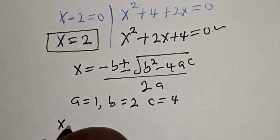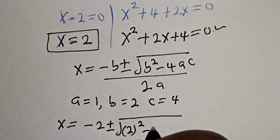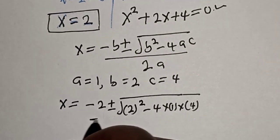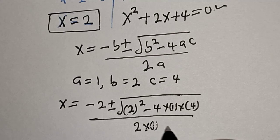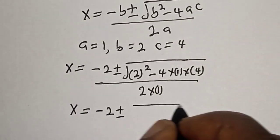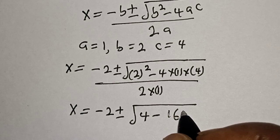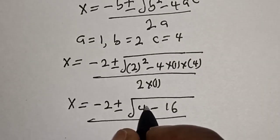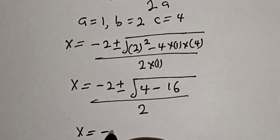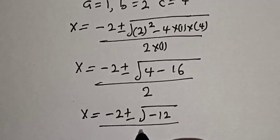Now we have s is equal to minus 2 plus or minus square root of 2 squared minus 4 multiplied by 1 multiplied by 4, divided by 2 multiplied by 1. This gives s is equal to minus 2 plus or minus square root of 4 minus 16, divided by 2.